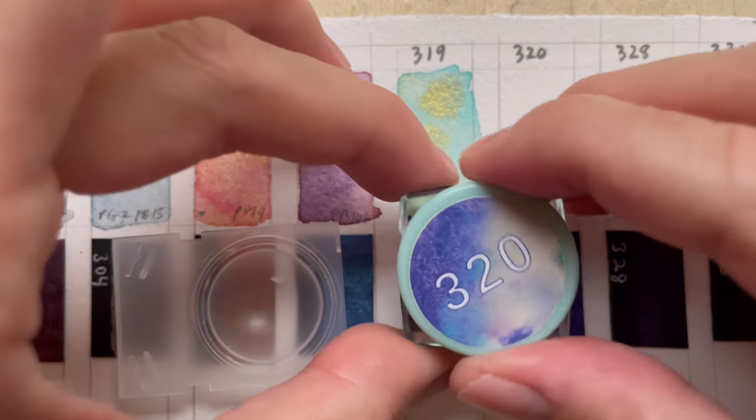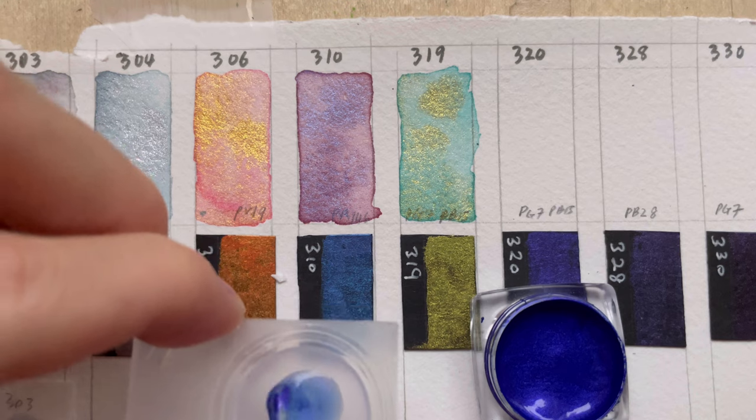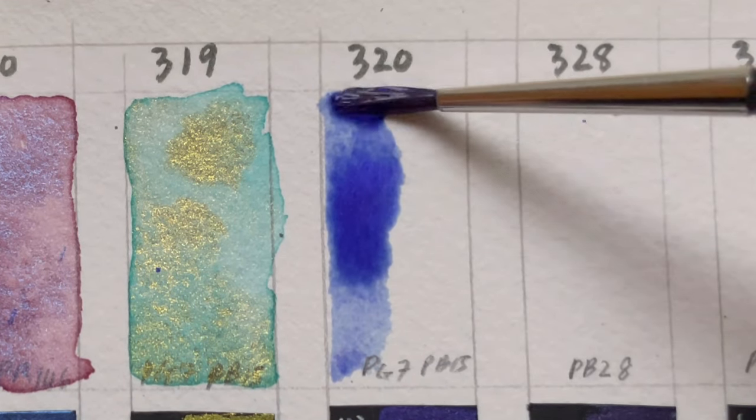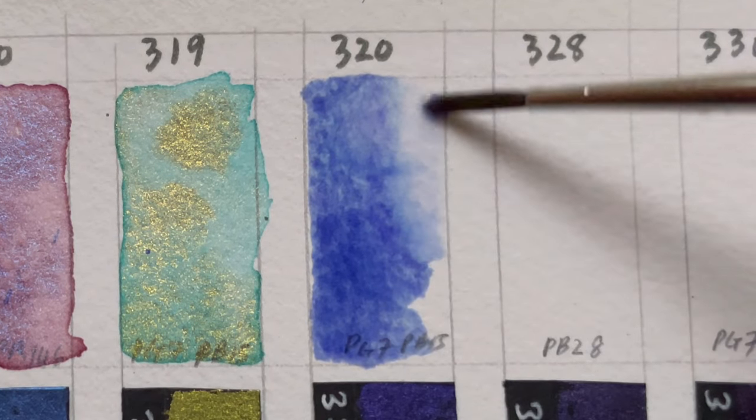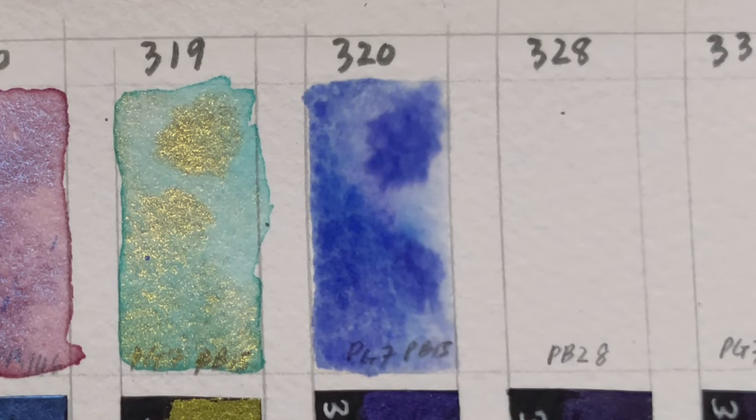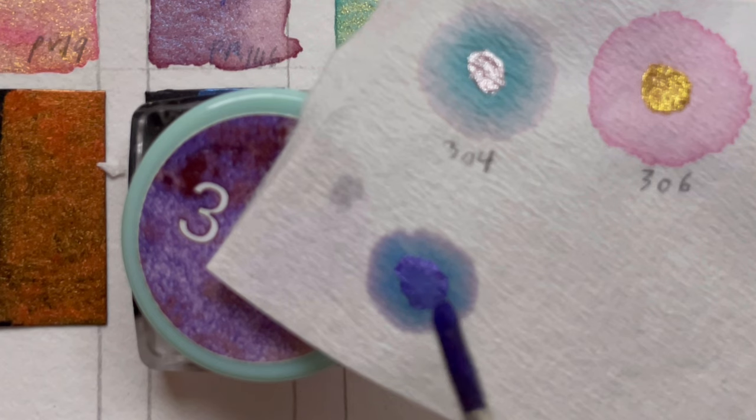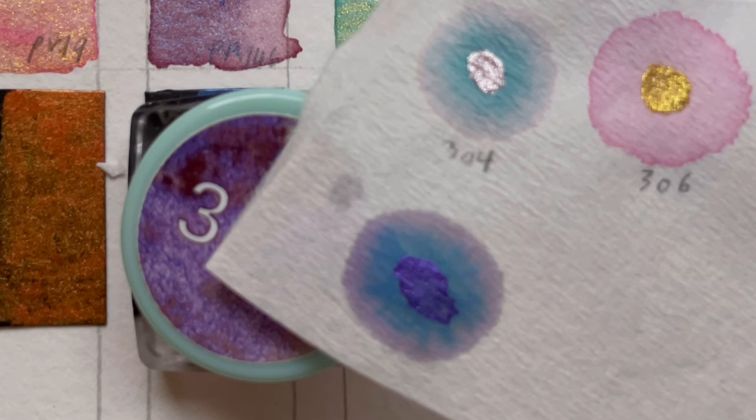Next is 320. It's made up of Mika, PG7, PB15. It appeared for the third time. This color paints very blue and it has got a purple shimmer at the top. Interestingly, this mixture separates into three components: the purple shimmer in the center, an immediate ring of blue, and finally a ring of purple.